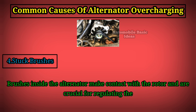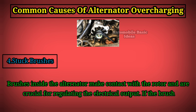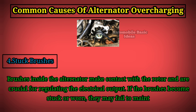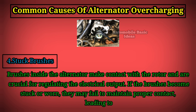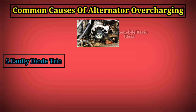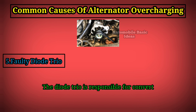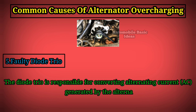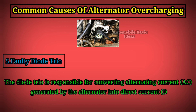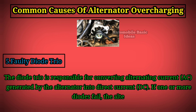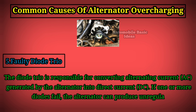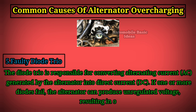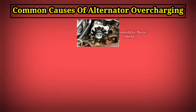If the brushes become stuck or worn, they may fail to maintain proper contact, leading to overcharging. 5. Faulty diode trio: The diode trio is responsible for converting alternating current (AC) generated by the alternator into direct current (DC). If one or more diodes fail, the alternator can produce unregulated voltage, resulting in overcharging.